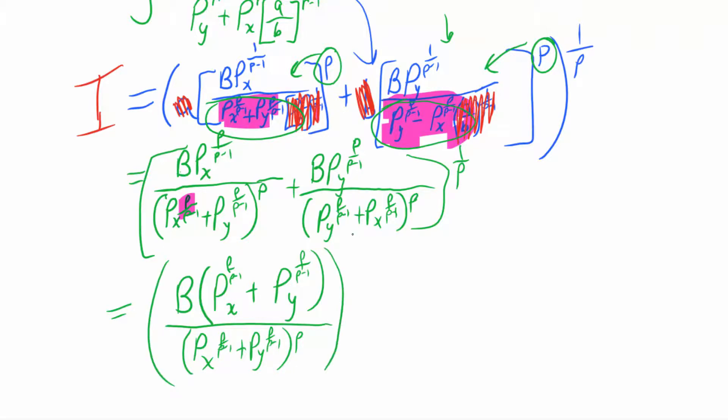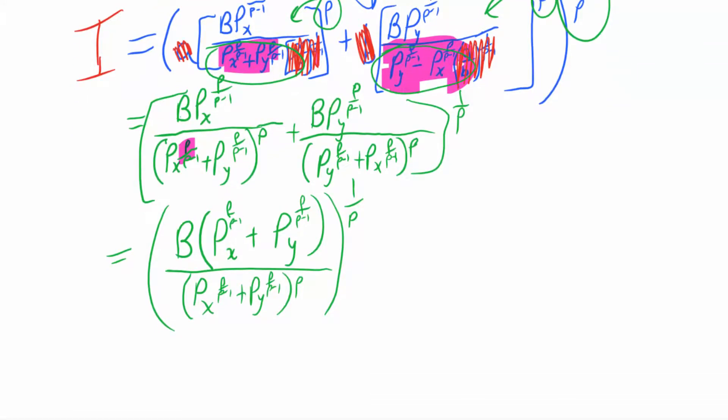And then on the bottom we have a common denominator. So price of x ρ, ρ minus one plus price of y ρ, ρ minus one to the ρ. So I misspoke when I said before those were going to cancel. Instead of canceling, what I was trying to say in my mind was that those are going to be a common denominator.